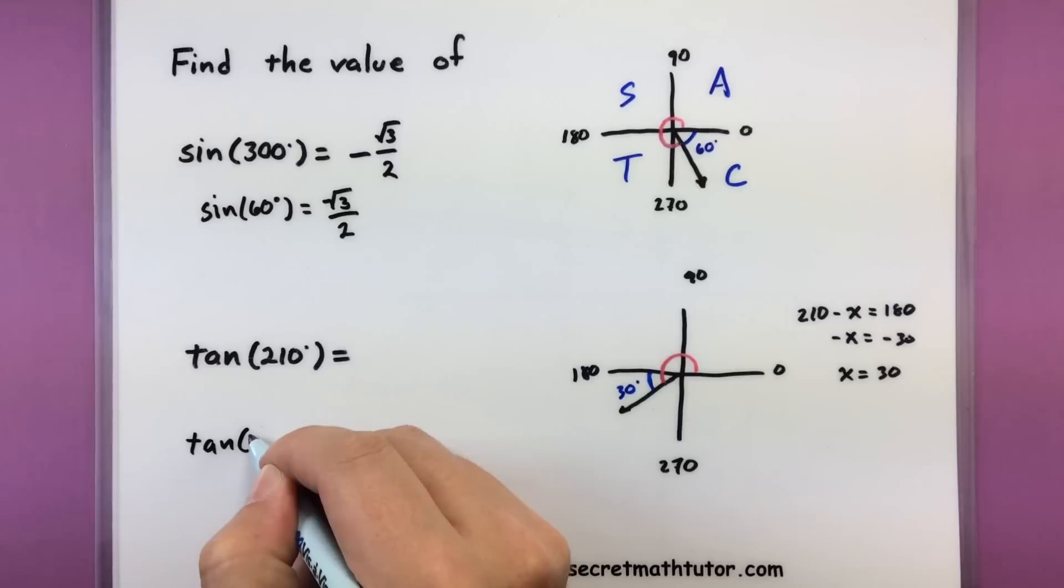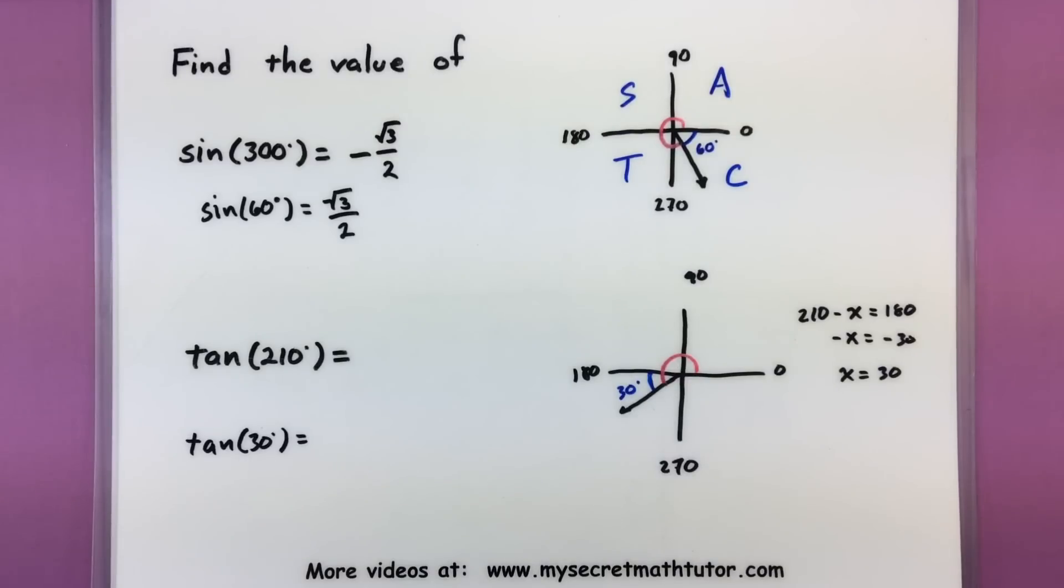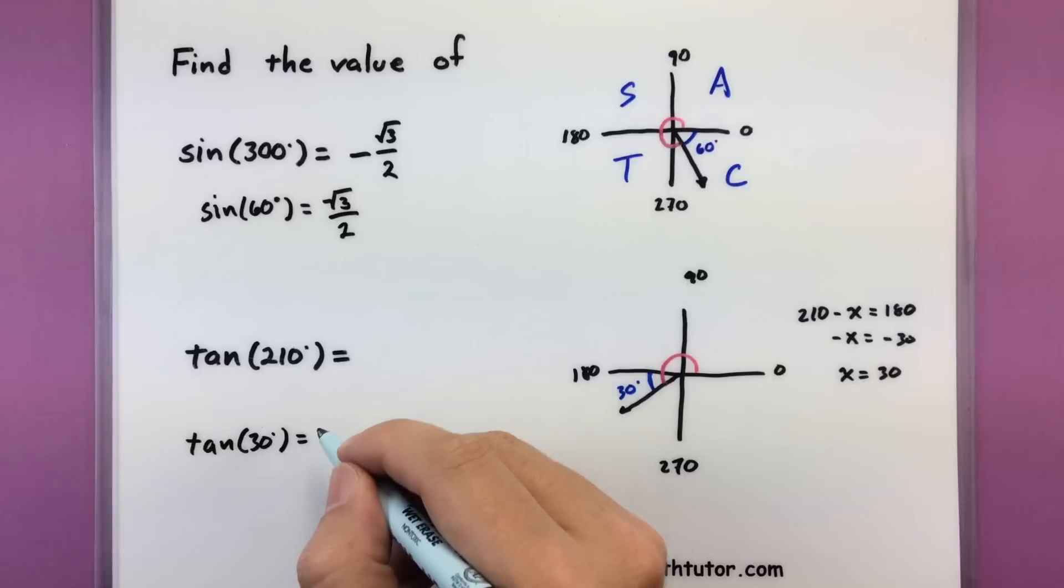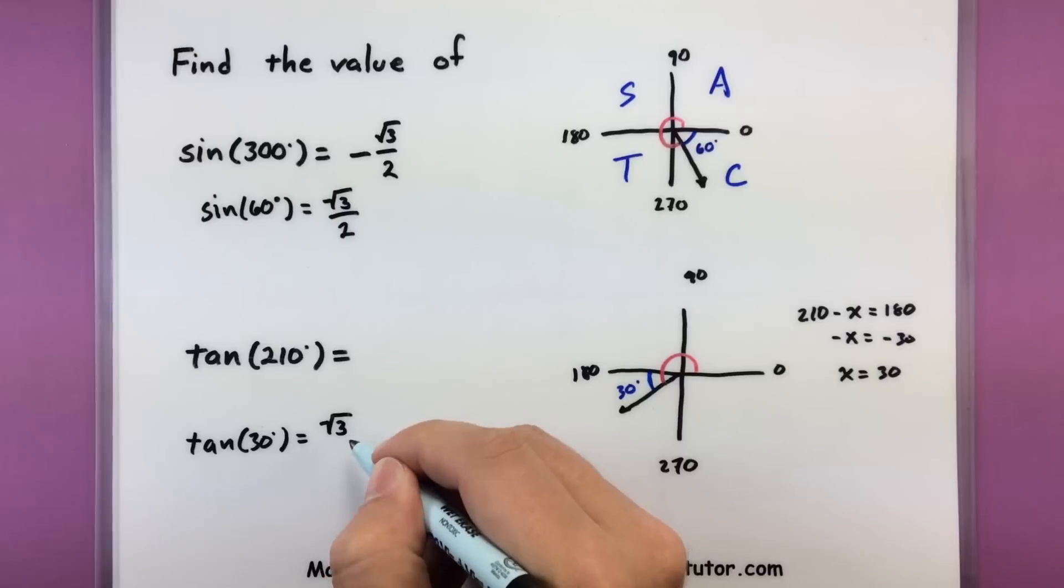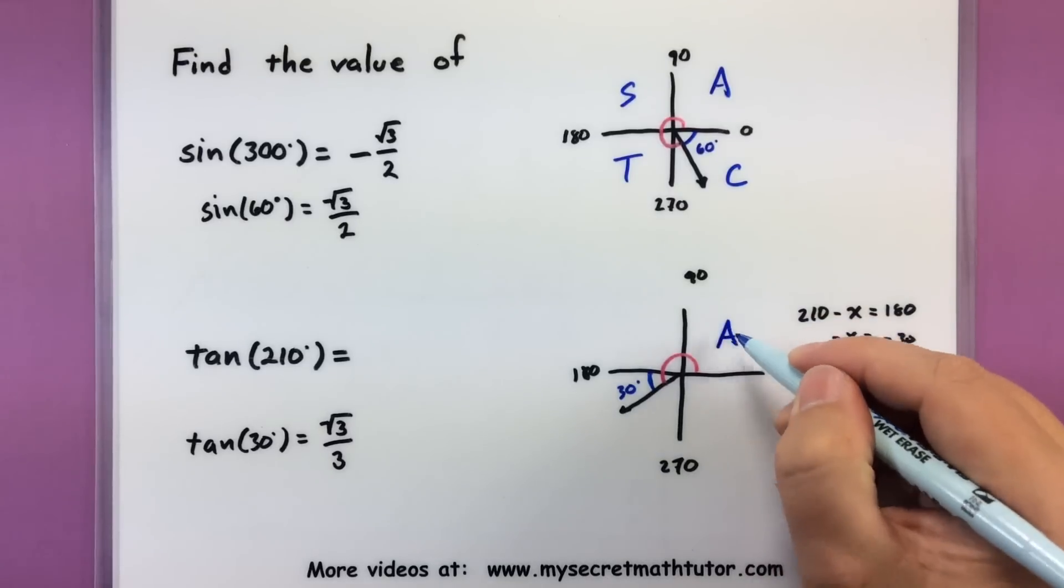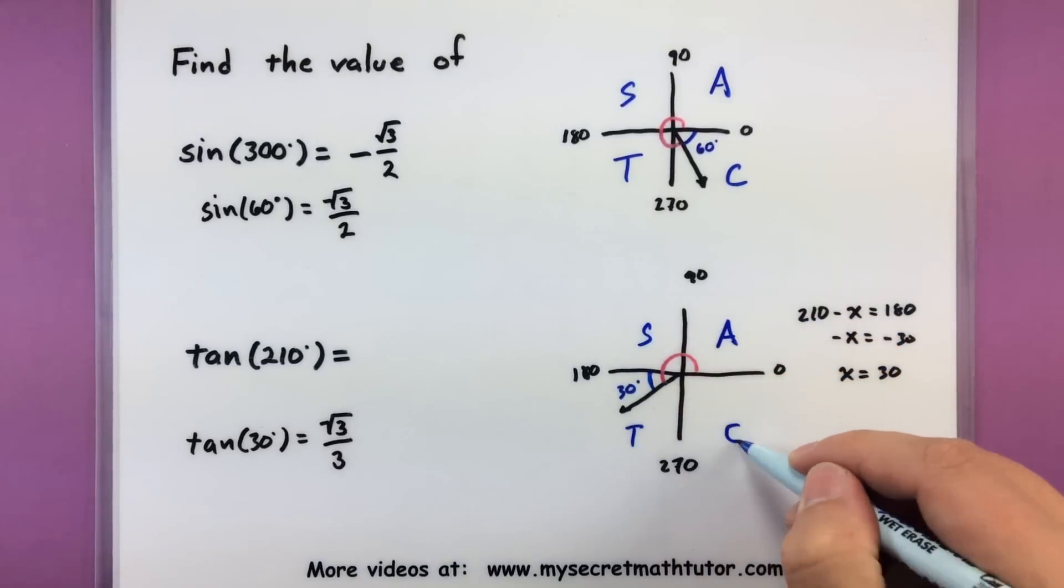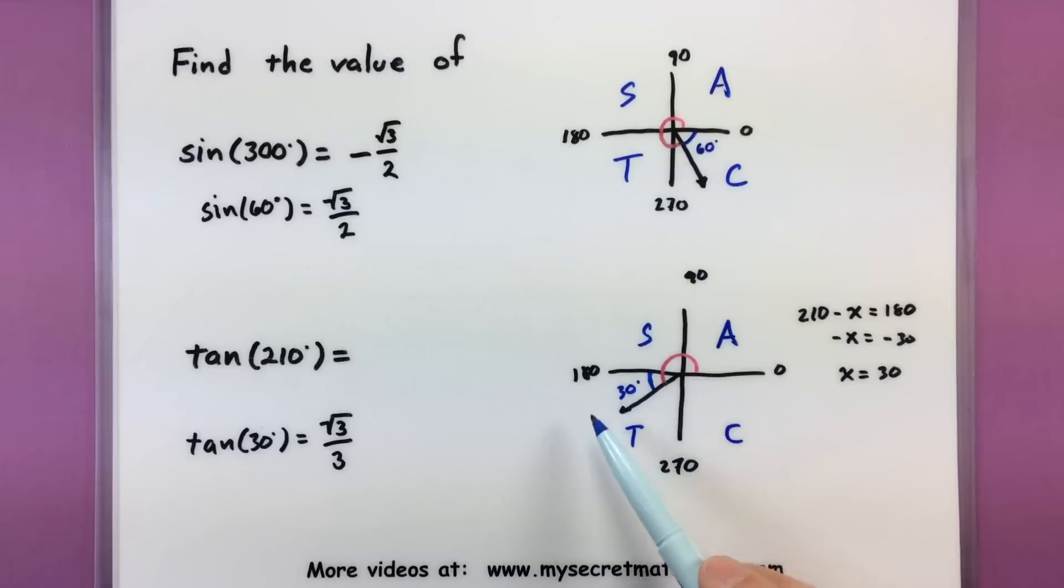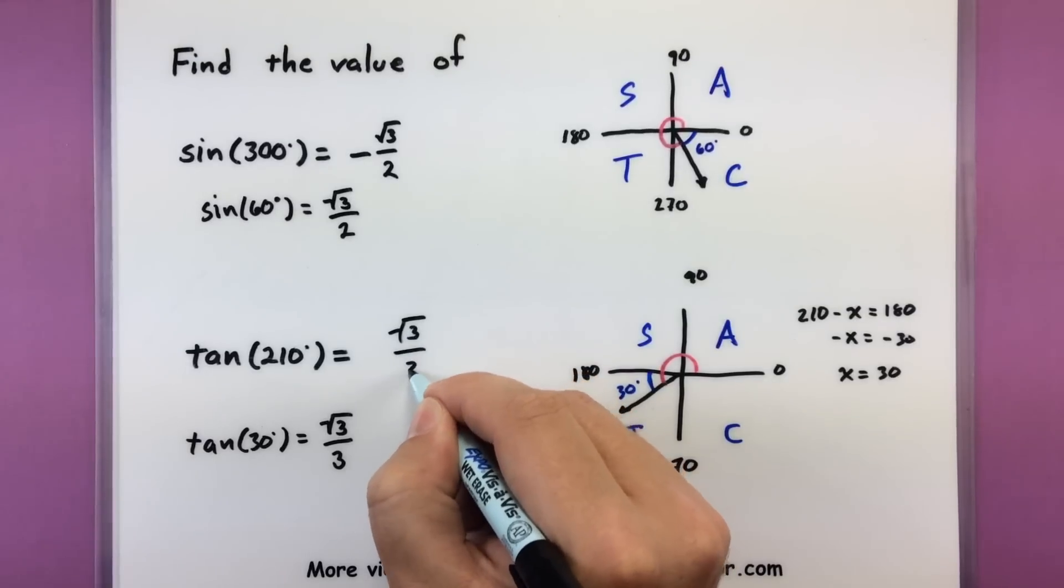We need to figure out what is tangent of 30 degrees. You could figure this out by looking at a table or looking at some of those special triangles from one of my other videos. This has a really nice value. This is the square root of three all divided by three. Now let's figure out whether this is positive or negative. All students take calculus. We are in quadrant number three. So tangent and its reciprocal are positive. Sure enough, that's exactly what we have. We have tangent. So we're going to leave it as a positive number, square root of three divided by three.